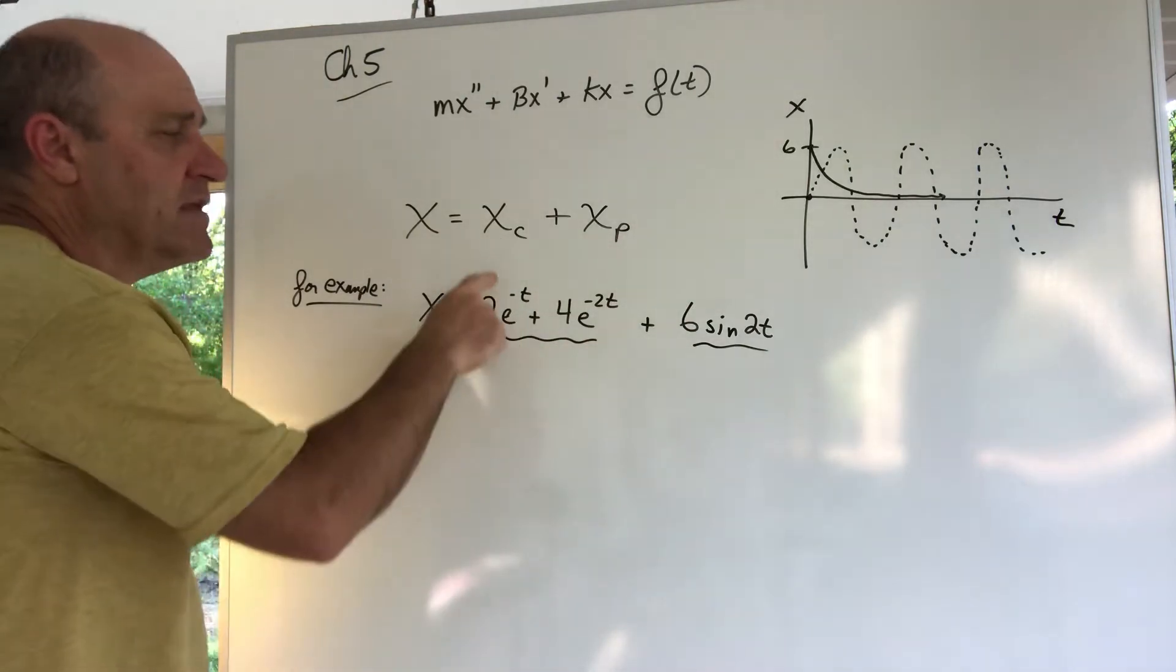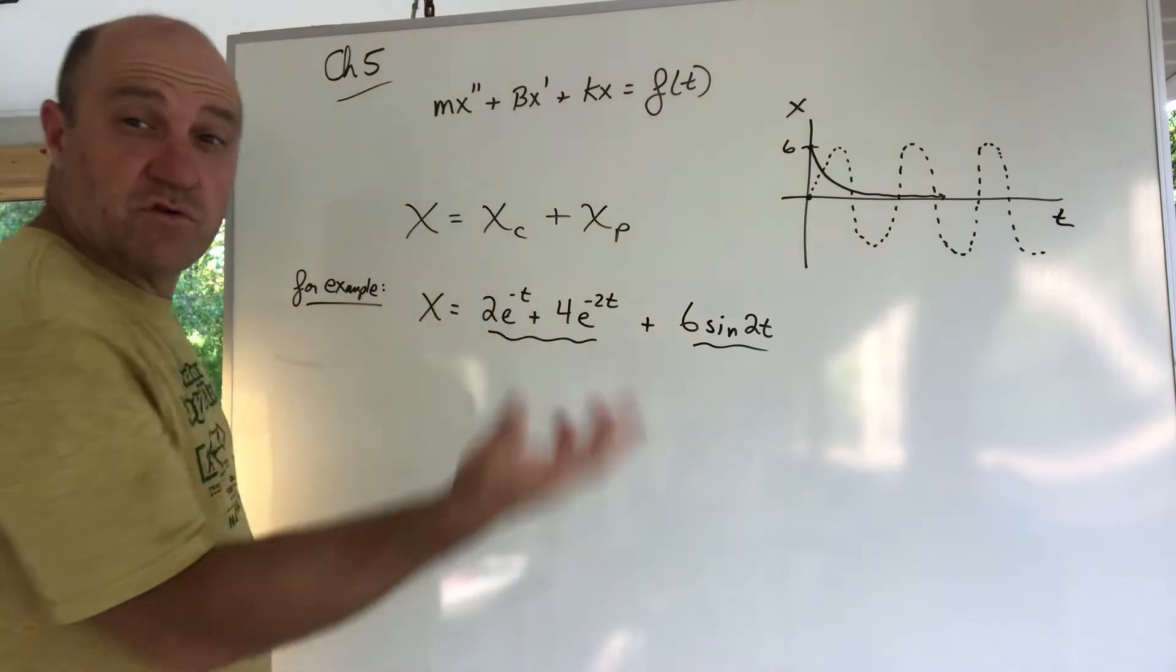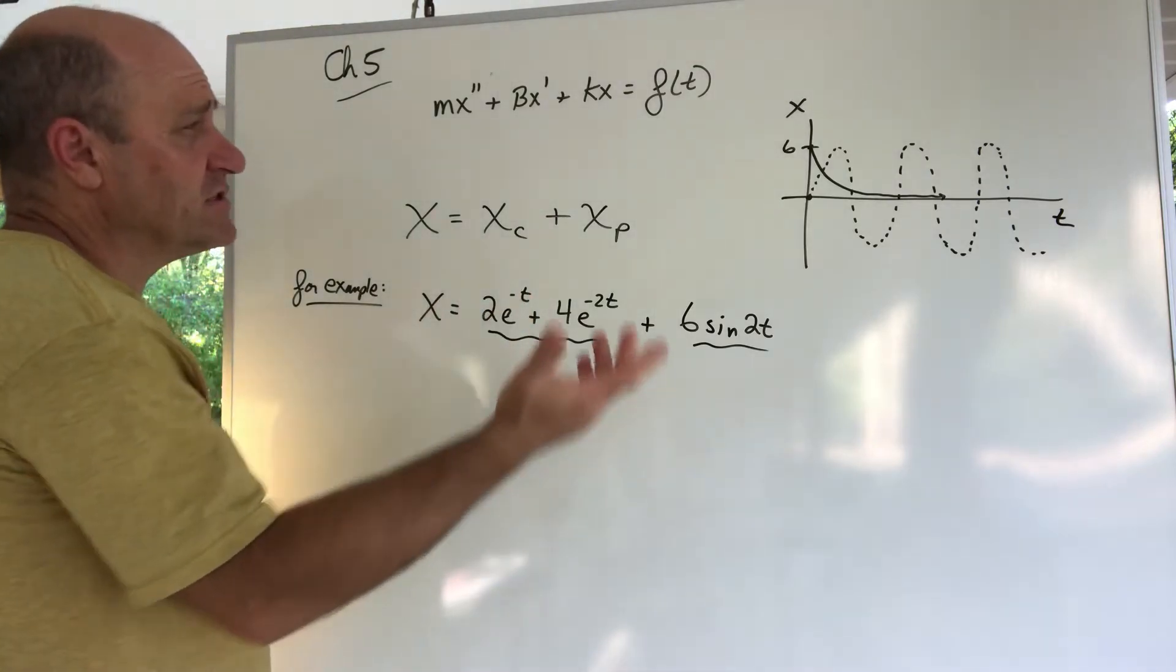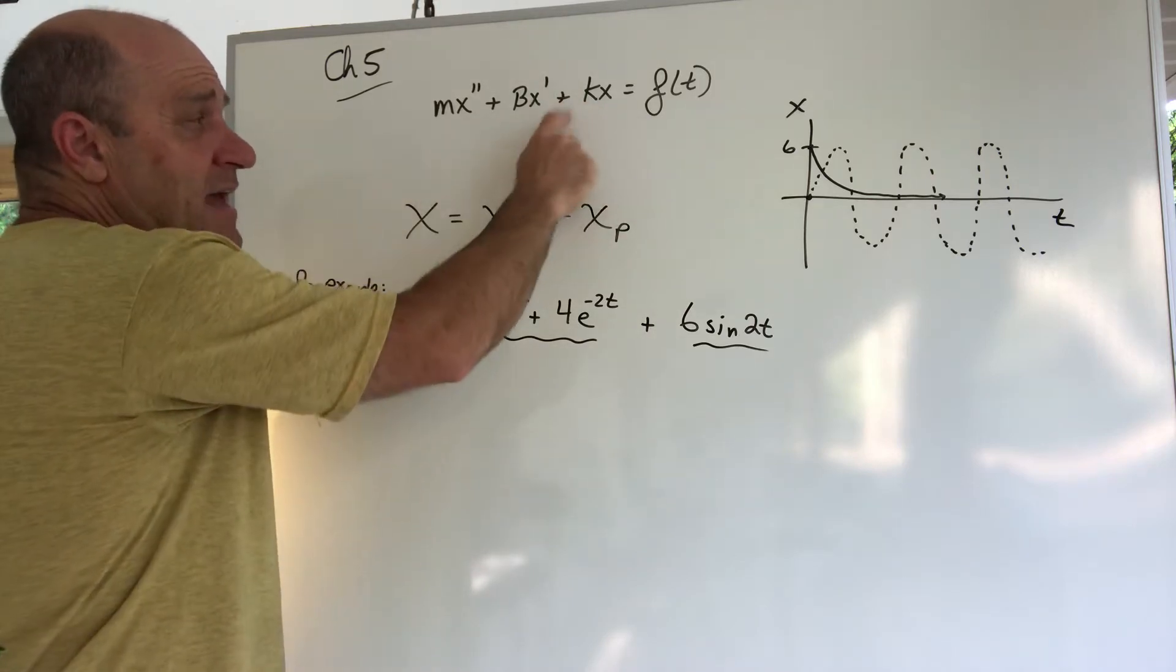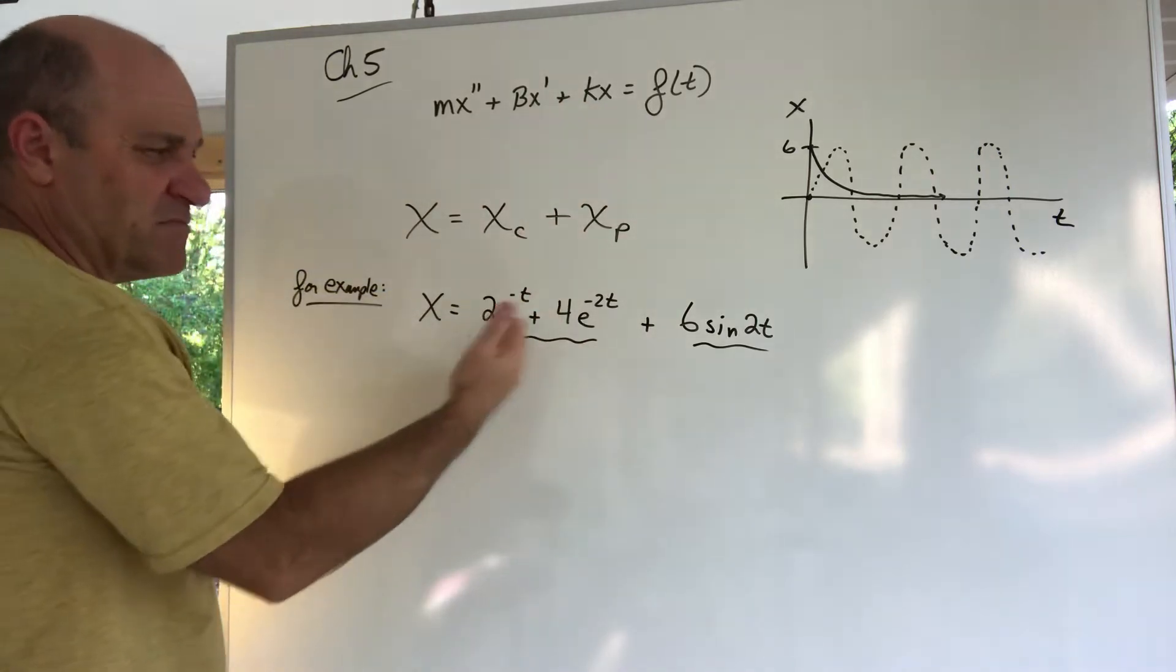The xc was the solution to the homogeneous version of this, so you pretend this is homogeneous, you get the xc, and it's damped. So I just made up a pretend answer.